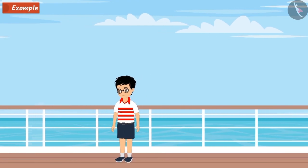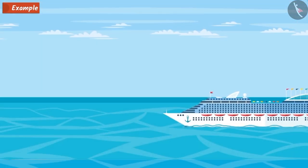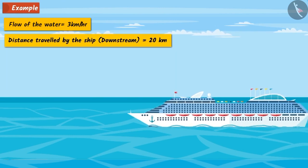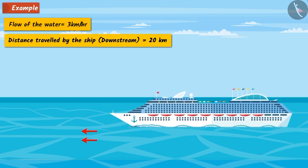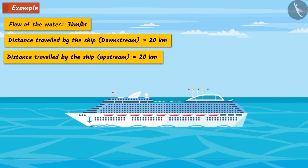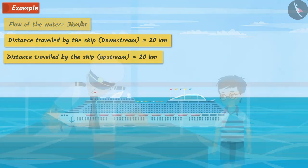Tarun spent 4 hours on a ship where the water flow was 3 km per hour and the ship ran 20 km downstream and 20 km upstream. When he came back, he sees the captain writing some math equation on paper.